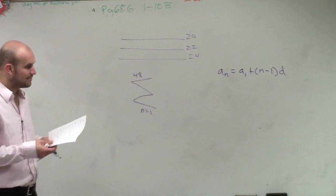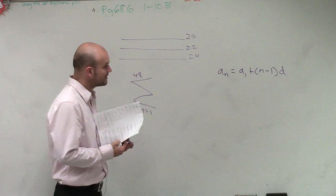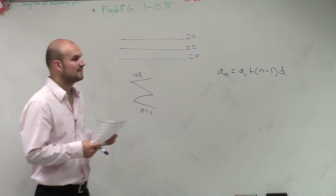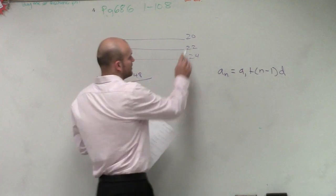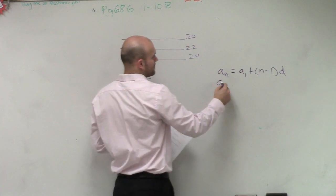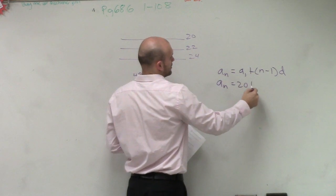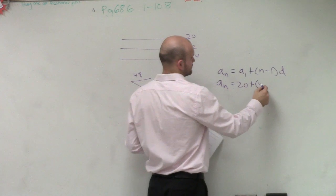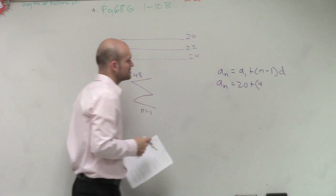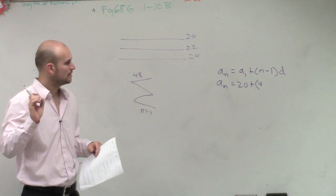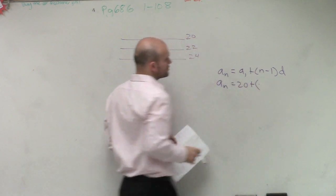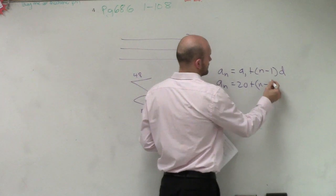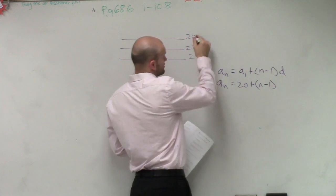And when using this rule, what we can look at is, we want to figure out what a sub n is, which is the rule. We know a sub 1 equals 20 plus n, which is 48. I'm sorry, what am I trying to figure out? I'm not trying to figure out n. I want to figure out the rule. So it's 20 plus n minus 1 times our difference, which is 2.